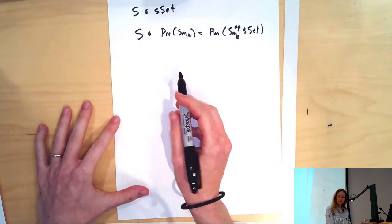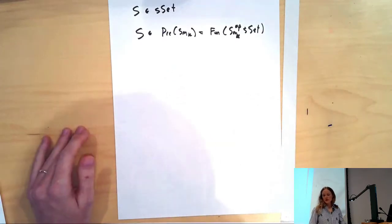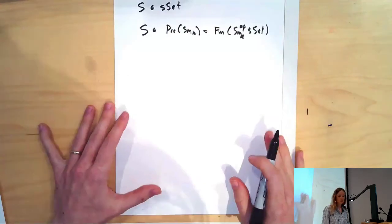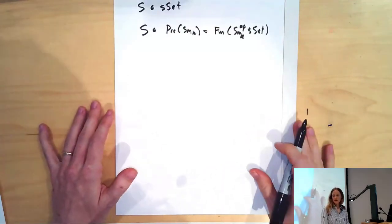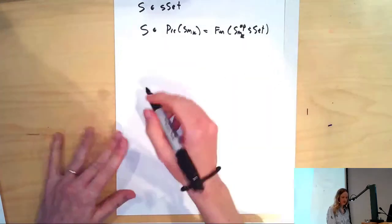We've got Thom spaces. If V was a virtual vector bundle, we could also make a Thom spectrum, and we will want to do that in a bit, but we'll think of them like Thom spaces.